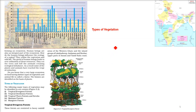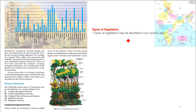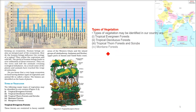The types of vegetation identified in India depend on places, latitude, water, soil, temperature, and other characteristics. There are five types: tropical evergreen forest, tropical deciduous forest, tropical thorn forest and scrubs, montane forest, and mangrove forest.